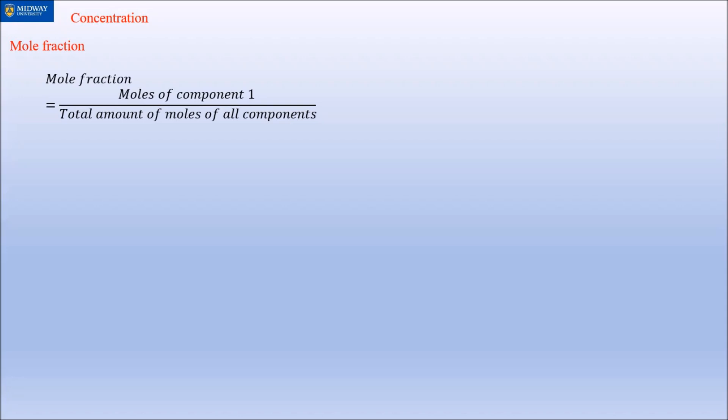The total moles for all components goes on the bottom, the denominator. Moles of each component goes on the top, and you do not have to multiply by 100. If you do, it becomes a percent problem. You just leave it as it is.